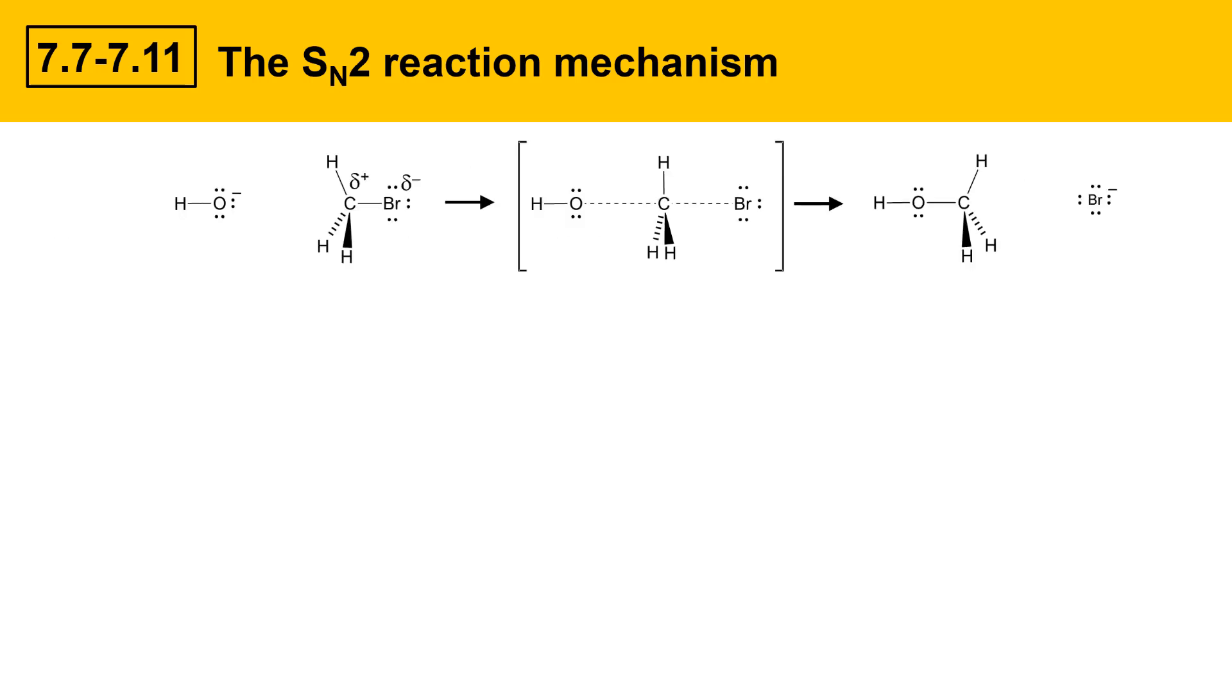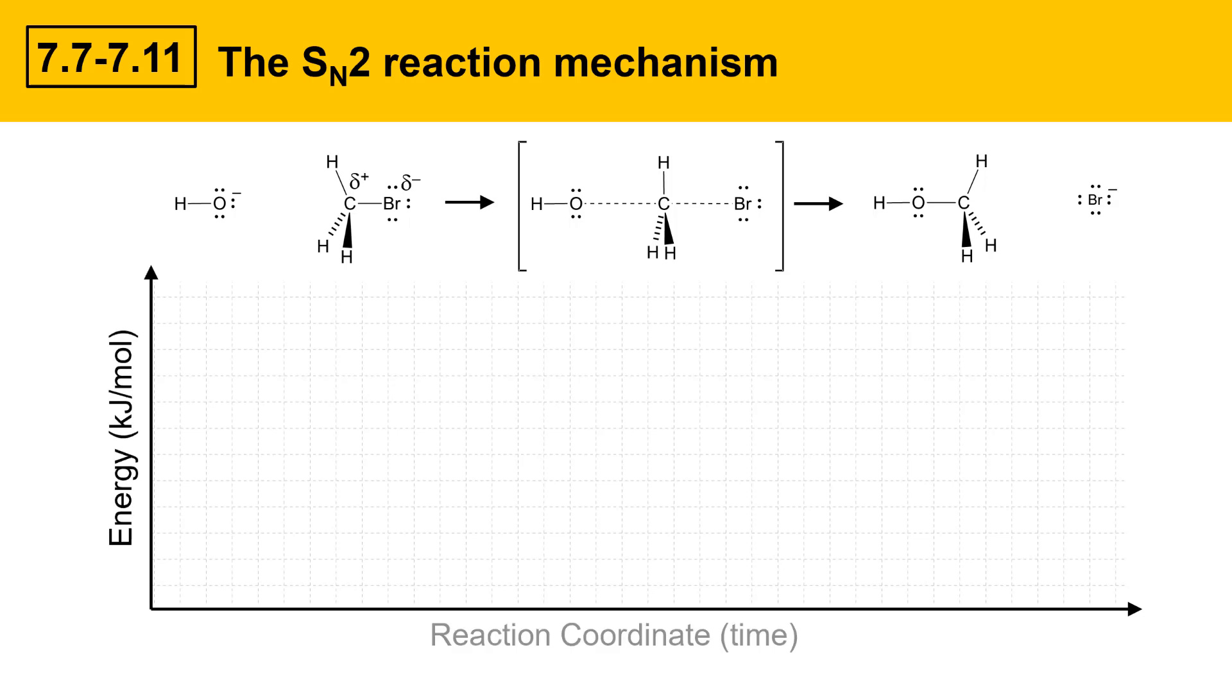This slide talks about the SN2 substitution mechanism, and here's that picture of what was described on the previous slide. There's the nucleophile, the alkyl halide, our transition state, and then the substitution product and the leaving group. We can graph the energy changes occurring in the process. This diagram shows on the x-axis reaction coordinate, that's just the progressing of time, so how the species change over time. On the y-axis there's energy, and here I'm using units of kilojoules per mole.